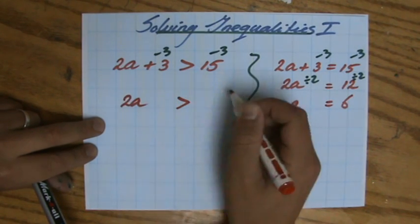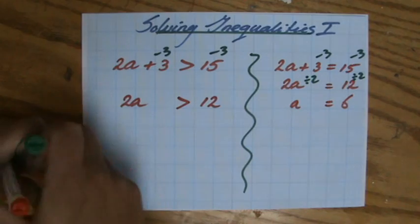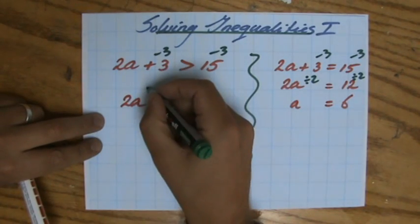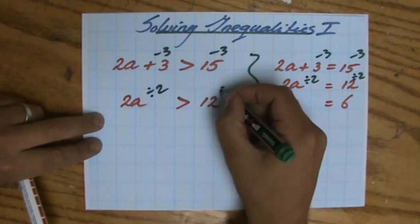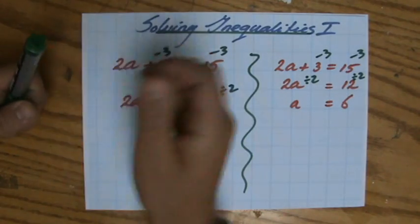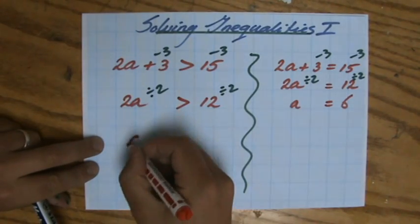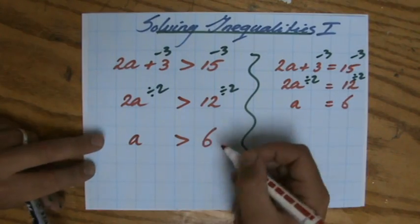So 2a is going to be larger than 12. And then to get rid of that coefficient 2, because we want to know what 1a equals. So 2 times a, the opposite of times is dividing by 2. So a larger than 6.